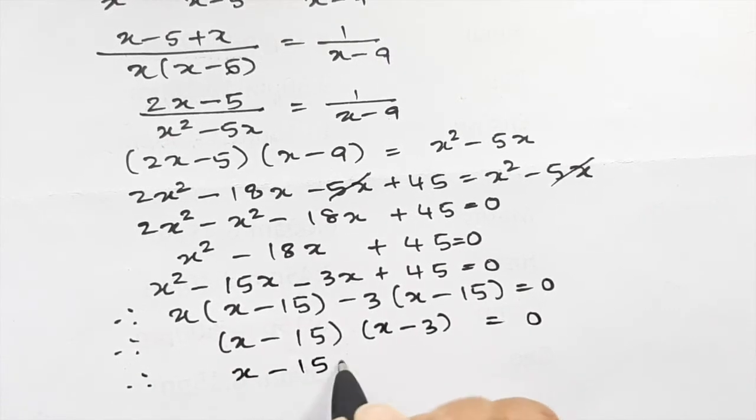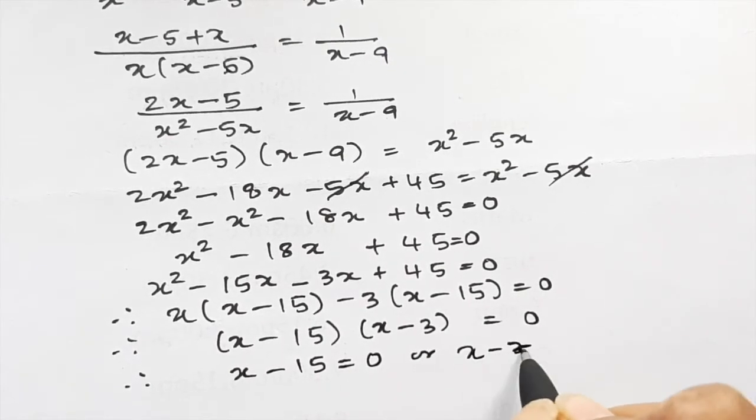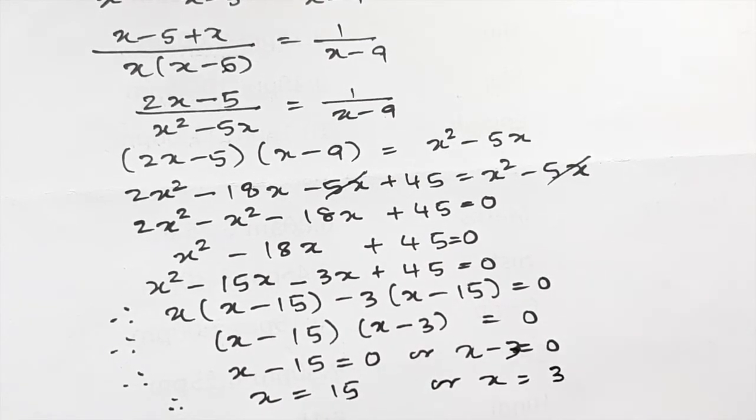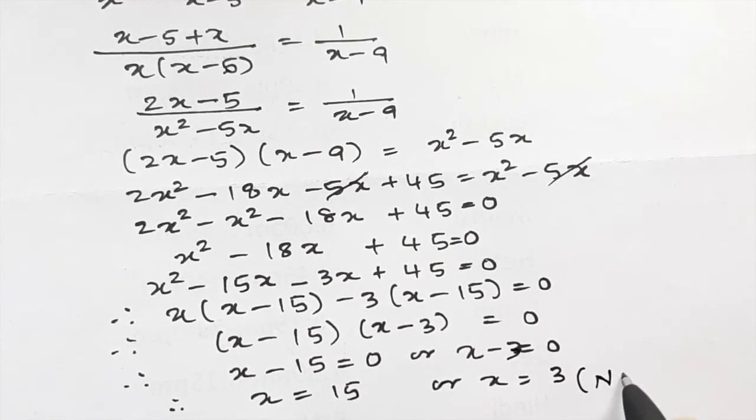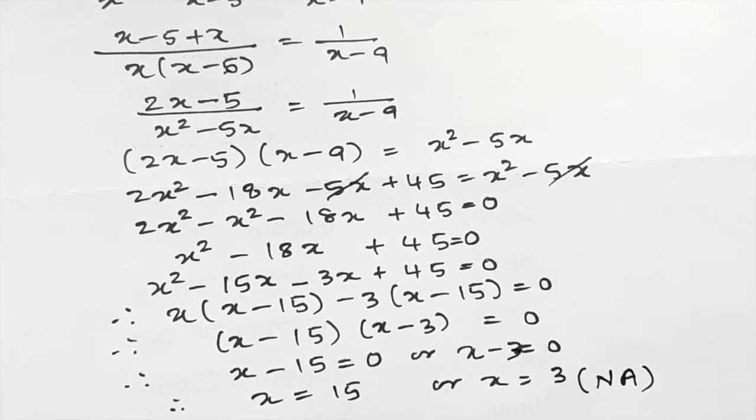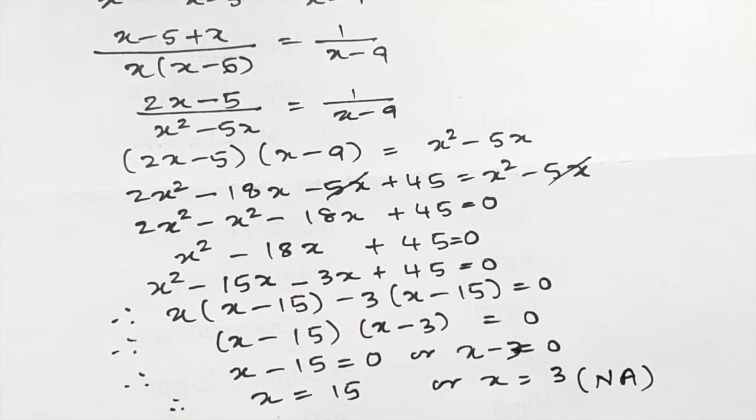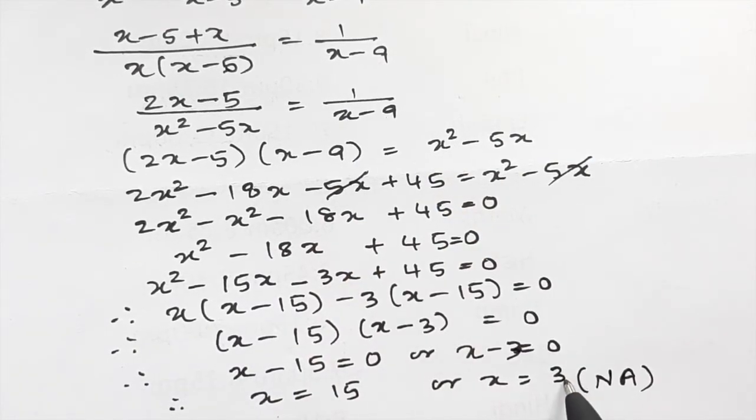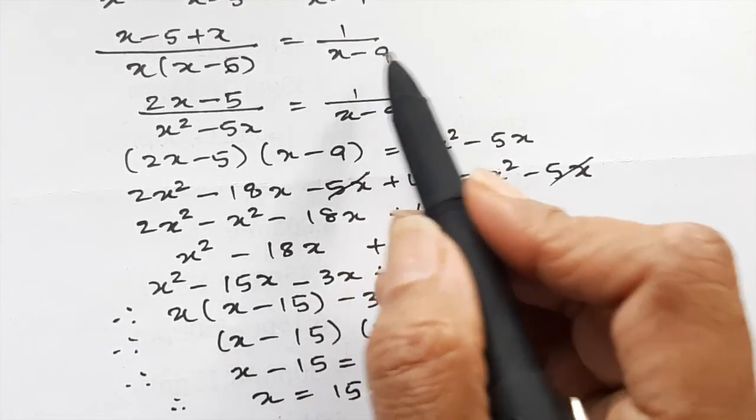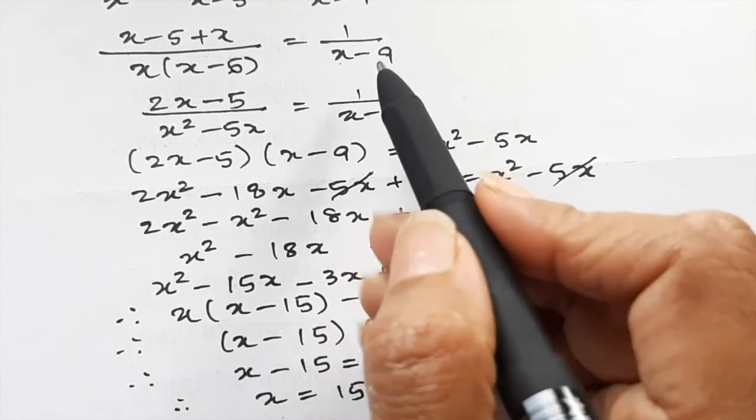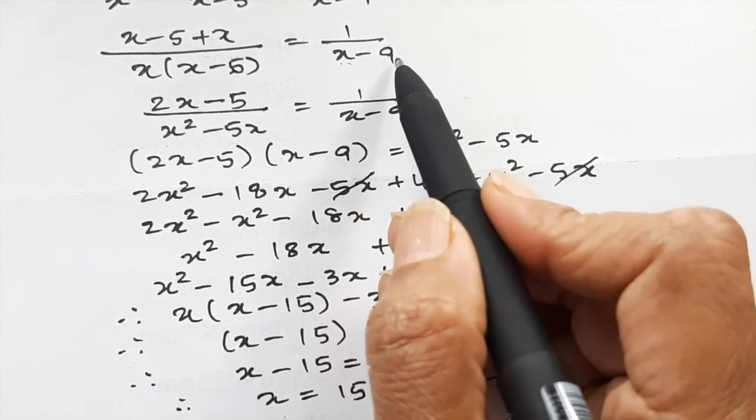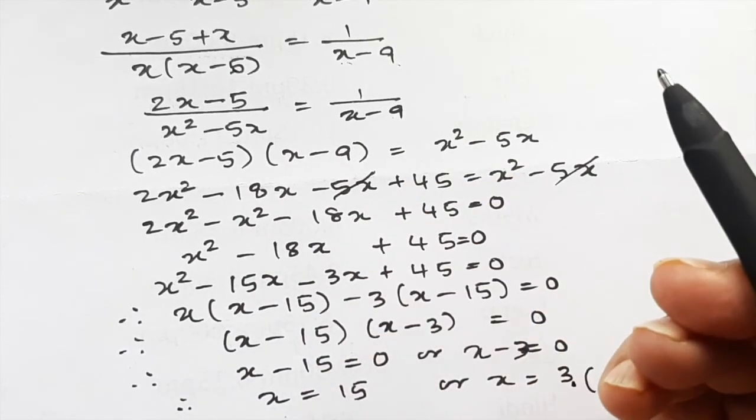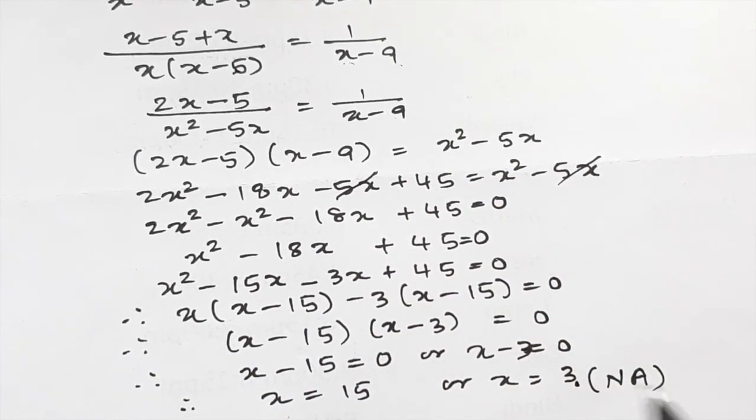Factoring using the zero product rule: (x-15)(x-3) = 0, so x = 15 or x = 3. Now this x equal to 3 will be not applicable. The reason is that if x is 3, then x minus 9 will be negative time. The time taken by the third pipe is x minus 9 hours, so you cannot have 3 minus 9 which is minus 6 hours. That is why this is not applicable.